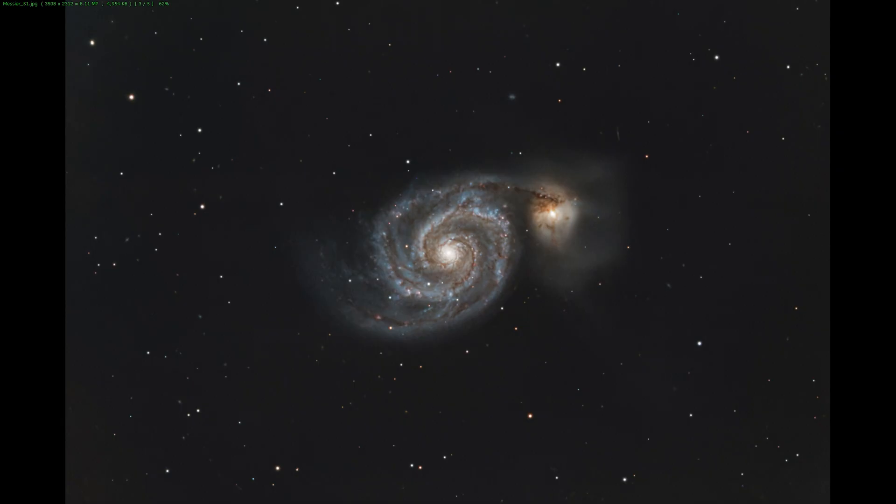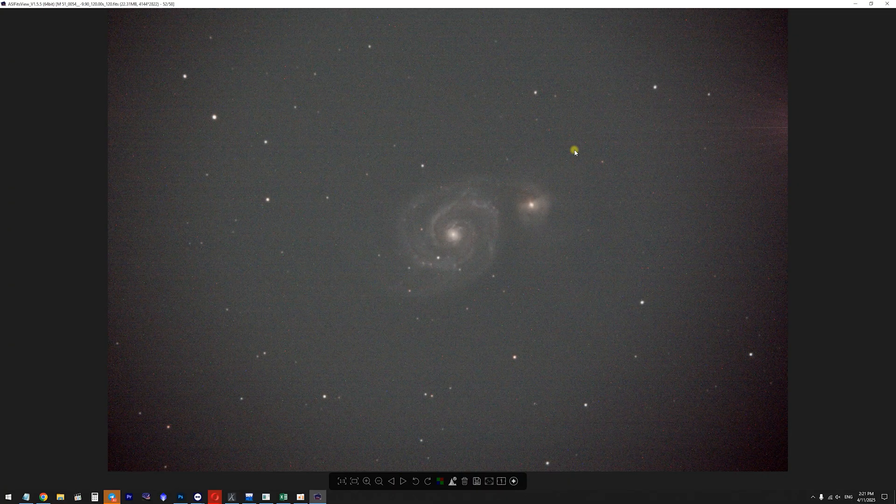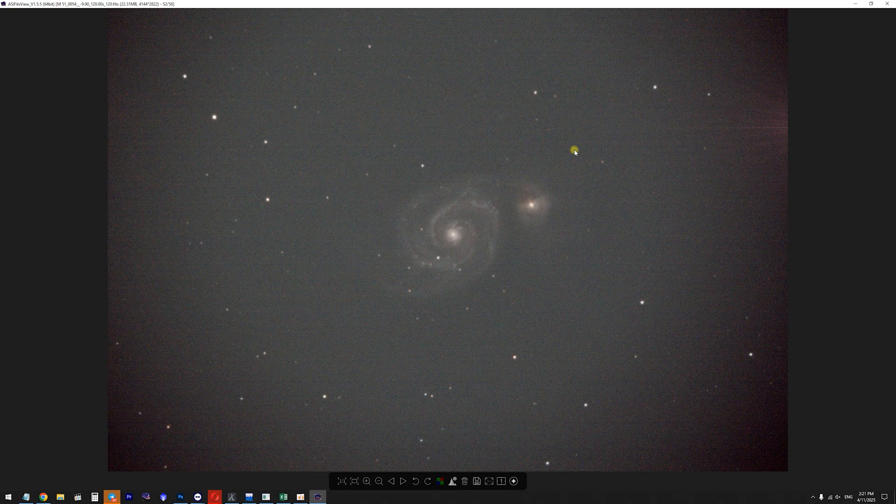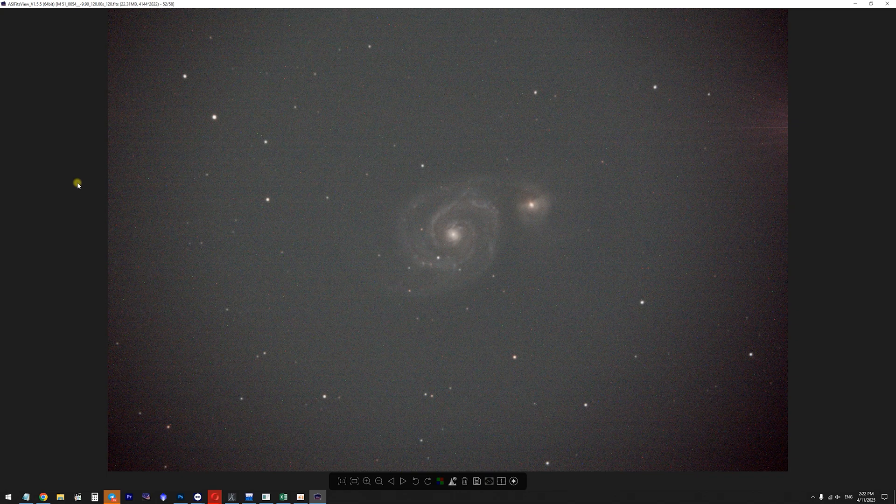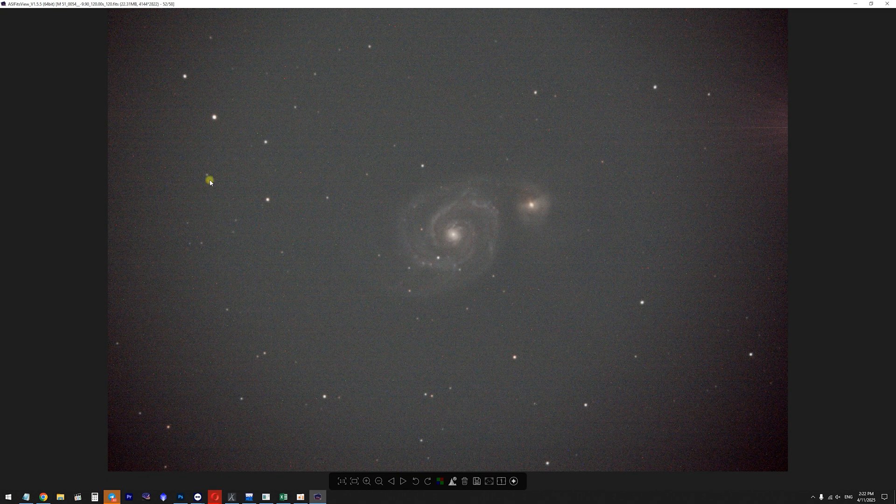However, I encountered a flaw in the current system. So this is what a single sub-exposure looks like when taking images with a reducer and a SV Bony SV405CC camera. Look at the amount of vignetting that I have here on the image and that's really debatable. For some people that might be okay, for some people might not. I believe in my case the shape of the vignetting and the amount is caused by the position of the reducer relative to the OTA itself.